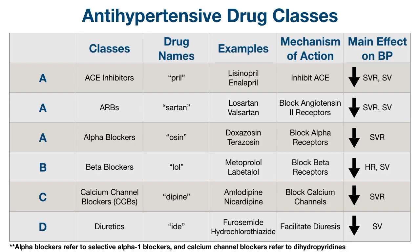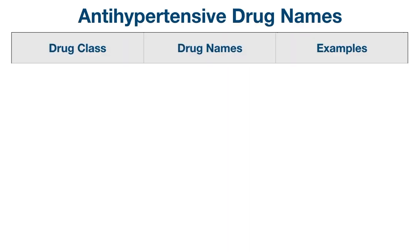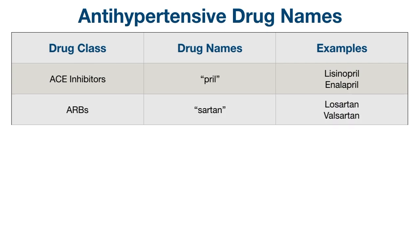Now let's take a look at some examples. We know ACE inhibitors end in -pril; some examples include lisinopril and enalapril. ARBs have the suffix -sartan, and some examples are losartan and valsartan.